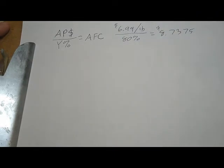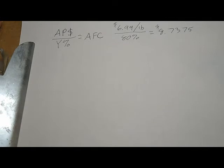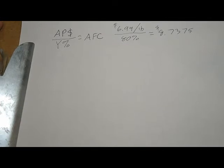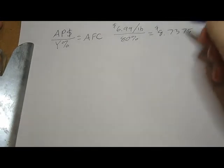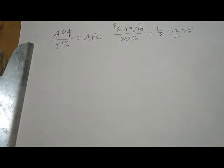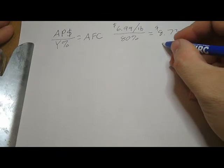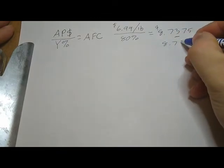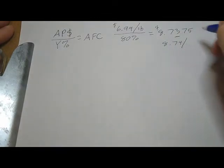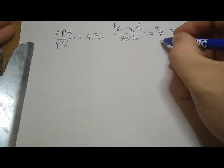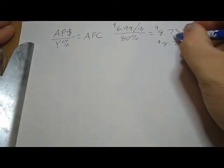We are dealing with money here, so we want to round this to the nearest penny. You go to the penny mark, which in this case would be 3. You look to the number to the right — if it's 5 or above, round up; 4 or below, leave it the same. With it being 7, this would get rounded up, so our adjusted food cost would be $8.74 a pound.